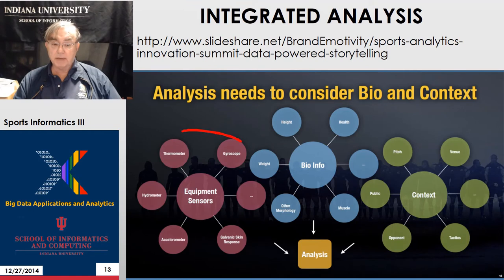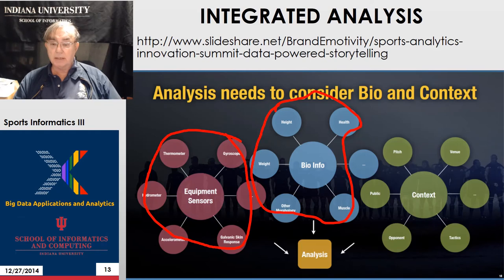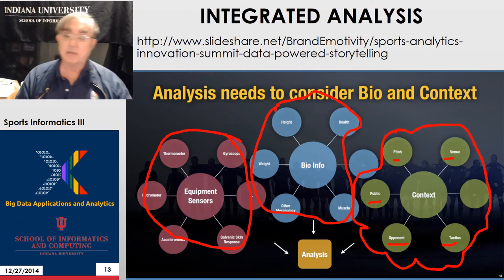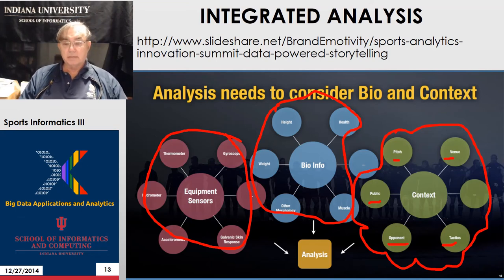This puts it all together. We have the sensors, and then we have the biometrics: weight, muscle, health, height. And then we have the context — what's going on, where are we using it, the tactics, the venue, the pitch. We understood from baseball the importance of these various things. The public drives the fiscal model which drives decisions. The nature of the opponent, and which are the good tactics, comes from these details and one-on-one interactions.